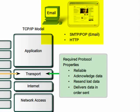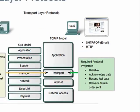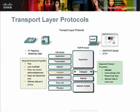Data such as email and web pages require that all of the data sent arrive at the destination in order to be useful. Any missing data could cause a corrupt communication that is either incomplete or unreadable. Therefore, these applications must use a transport layer protocol that is reliable, as is TCP.